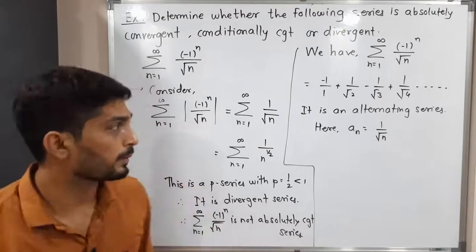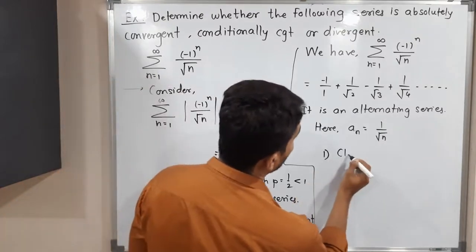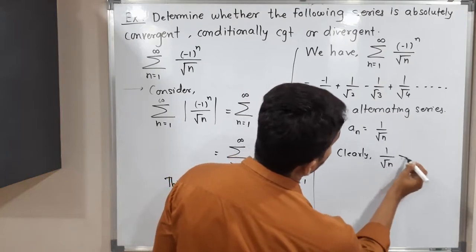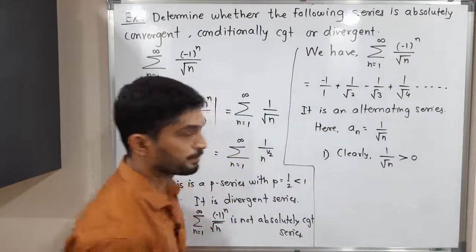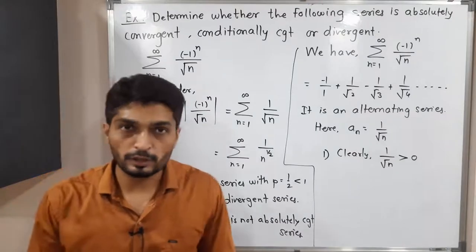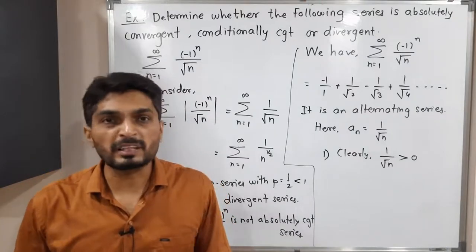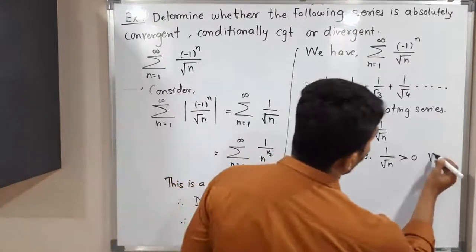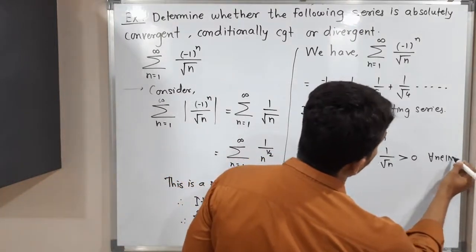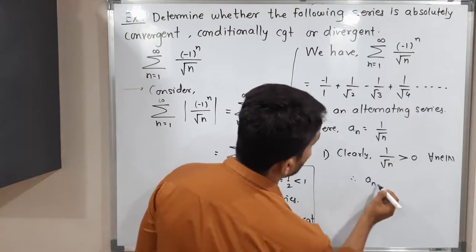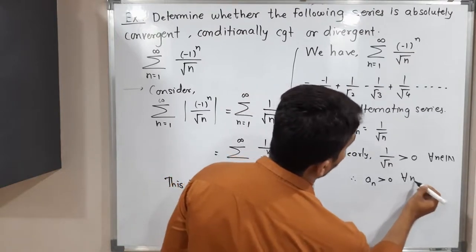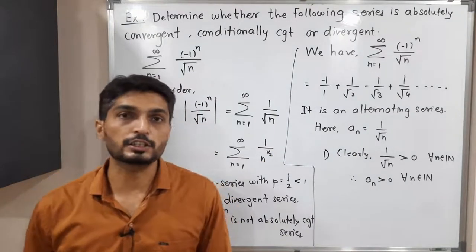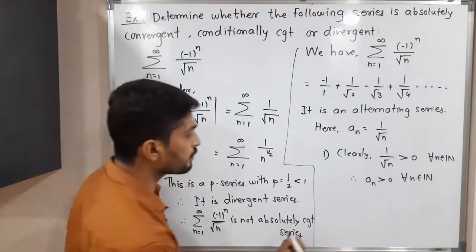Checking the first condition: clearly 1/√n > 0, since n is a natural number and we take only the positive square root, so it is greater than 0 for all n ∈ ℕ. Therefore a_n > 0 for all n ∈ ℕ, and the first condition is satisfied.